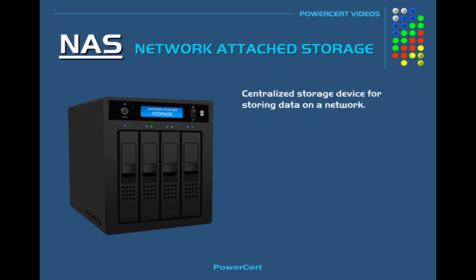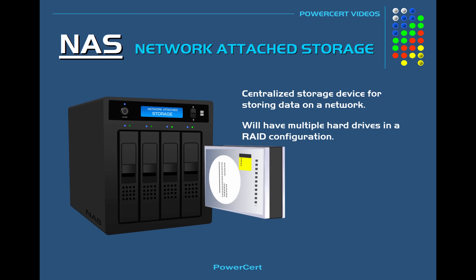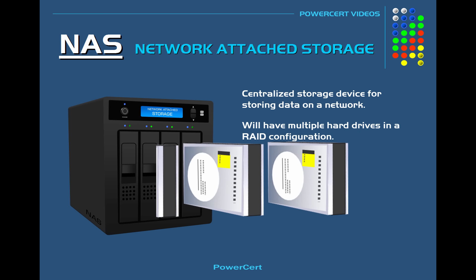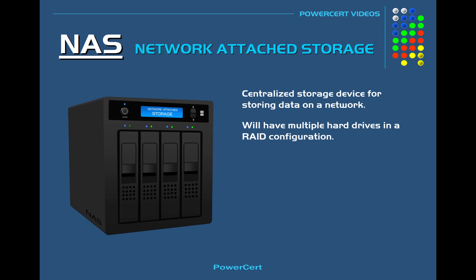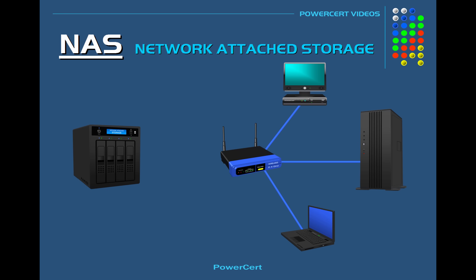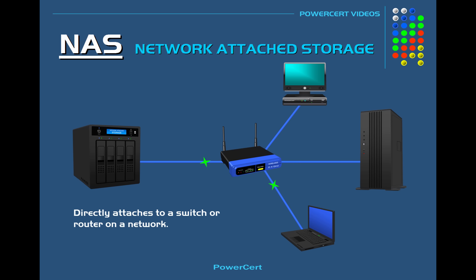A NAS is a storage device that is used for storing data and it doesn't do anything else besides storing data. Typically a NAS is a box that'll have multiple hard drives in a RAID configuration for redundancy, and it'll also have a network interface card that'll directly attach to a switch or router so that the data can be accessed over a network. Once it's on the network it can be accessed from other devices such as desktops, laptops, and servers, and it can be accessed as a shared drive.